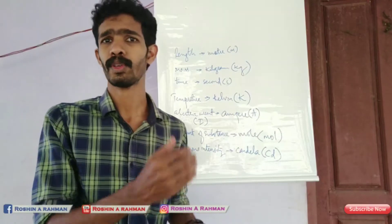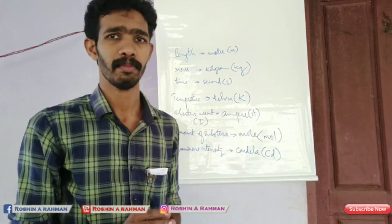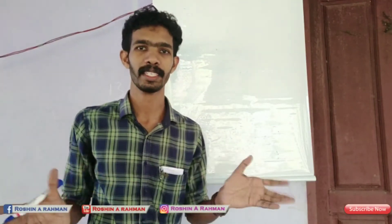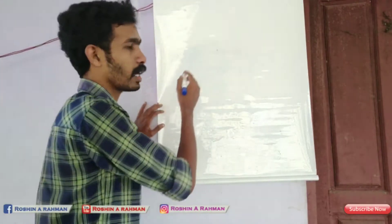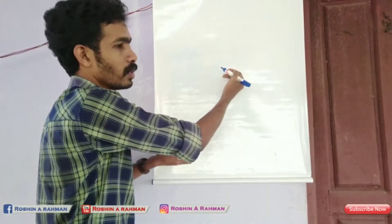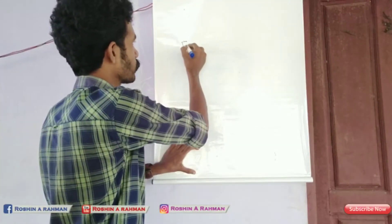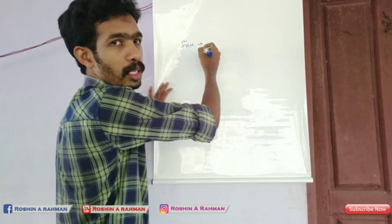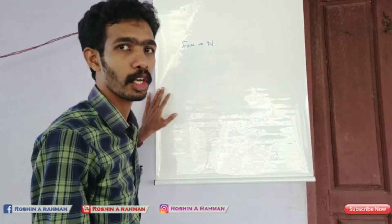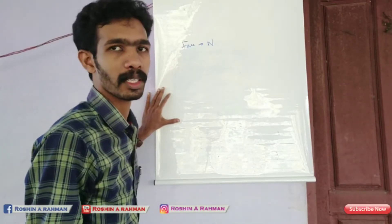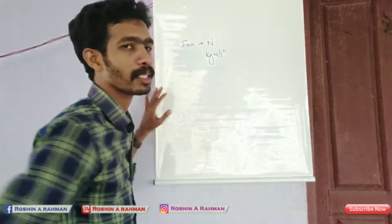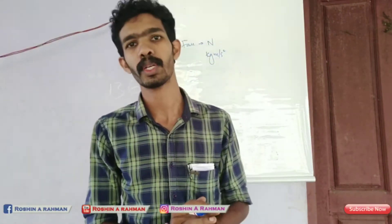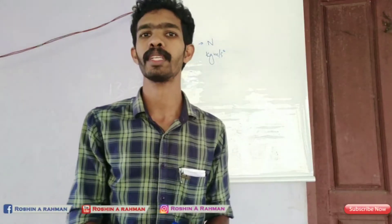This is the summary of fundamental units. Now let's check the derived units. The force is Newton. Newton is the SI unit of force, and the unit is 1 kilogram meter per second square.